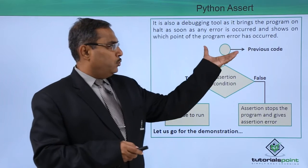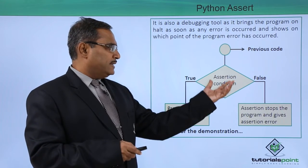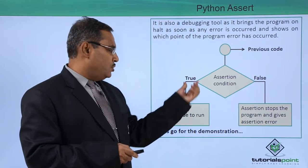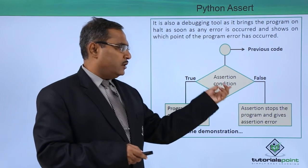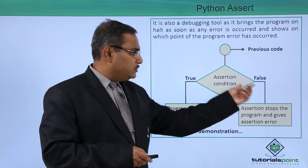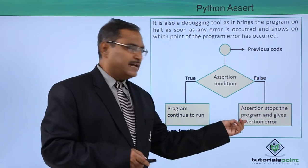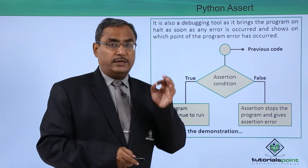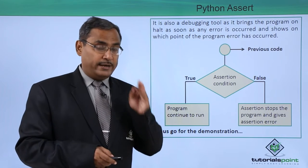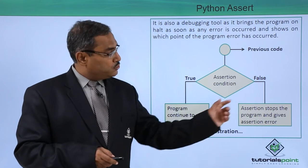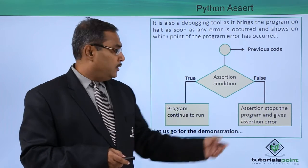Looking at the previous code, we now have the assertion condition. If the assertion condition is true, the program continues to run. If the assertion condition is false, the assertion stops the program and gives an assertion error, along with the respective point where that particular error has occurred.